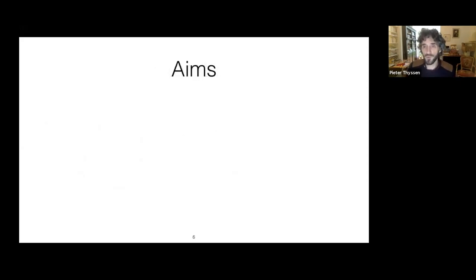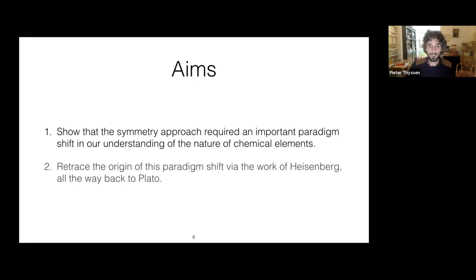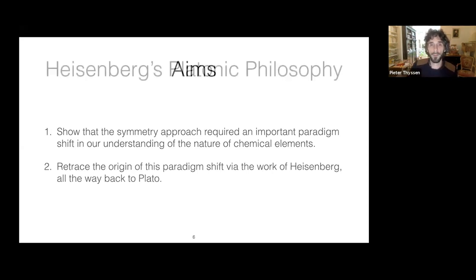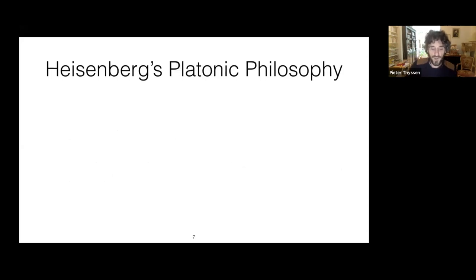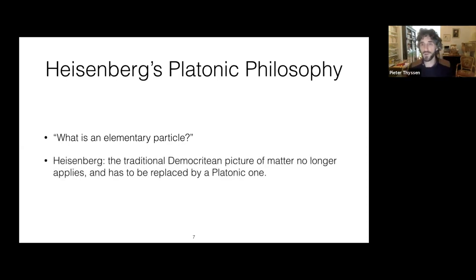The aim of this talk is twofold: first, to show that the symmetry approach required an interesting paradigm shift in our understanding of the nature of chemical elements; and second, to retrace the origin of this paradigm shift via the work of Heisenberg all the way back to Plato. The question of what is an elementary particle had haunted Heisenberg for most of his scientific career. Slowly, Heisenberg came to the conviction that the traditional Democritian picture of matter no longer applied, and that it had to be replaced by a Platonic one.